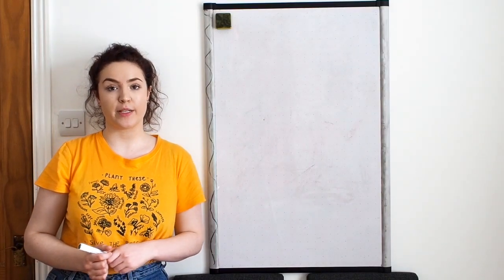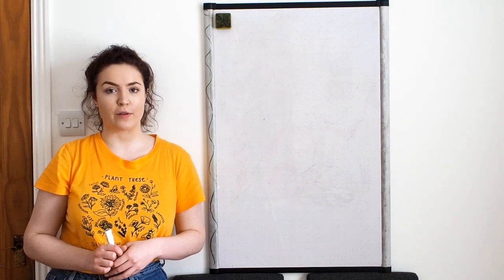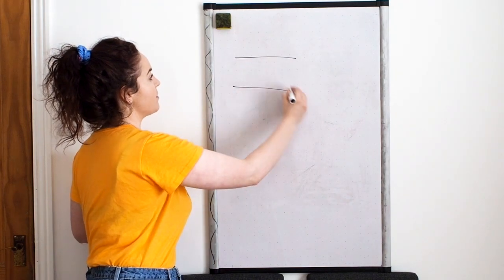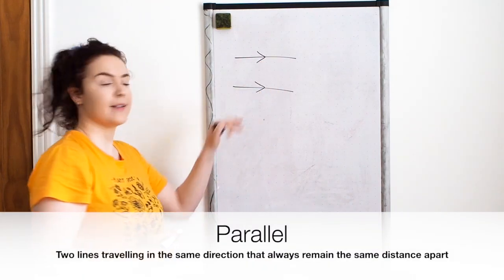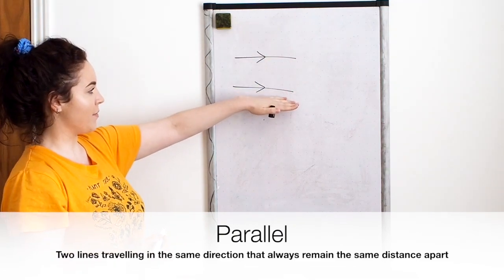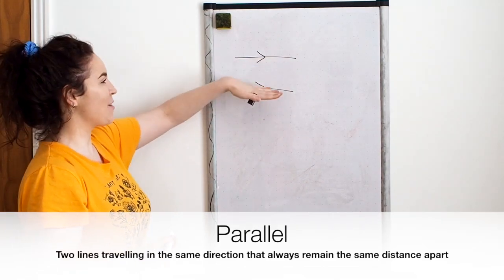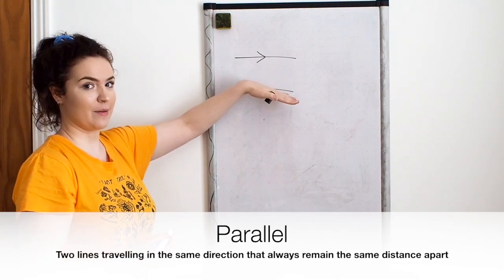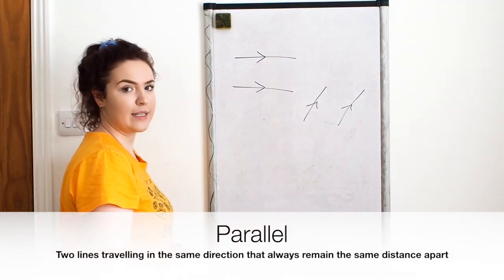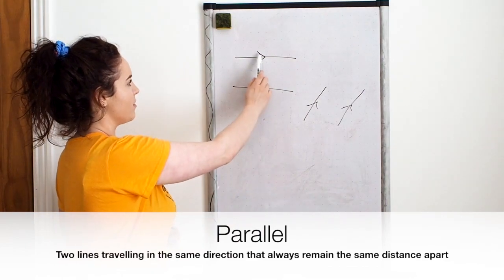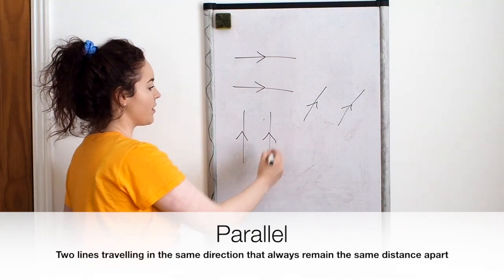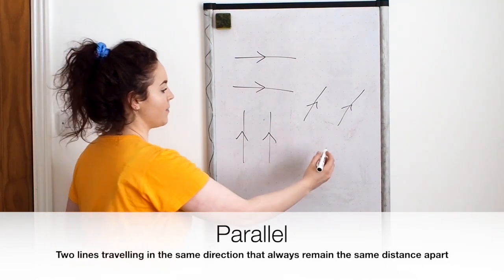Next we're going to talk about the word parallel, which I'm sure you've come across throughout school. Parallel means two lines that are travelling in the same direction and they always remain the same distance apart. So no matter how long you carried these lines on for, if they were exactly parallel they would always remain the same distance apart. It doesn't matter which direction they're going as long as it's the same way, and we show they're parallel by drawing these arrows.